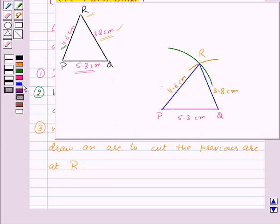Thus our last step of construction is join PR and QR. And so triangle PQR is the required triangle.